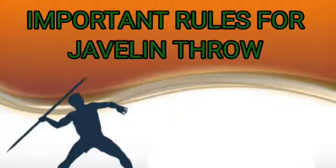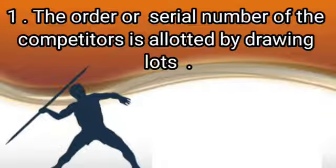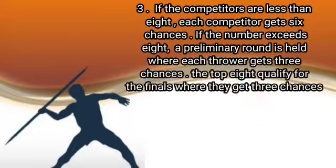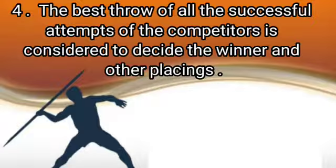Important rules for javelin throw. The order of competitors is allotted by drawing lots. Every thrower gets a practice round in the drawn order before the competition starts. If the competitors are fewer than 8, each competitor gets 6 chances. If the number exceeds 8, a preliminary round is held where each thrower gets 3 chances. The top 8 qualify for the final where they each get 3 chances. The best throw of all successful attempts is considered to decide the winner and other placings.